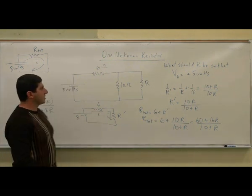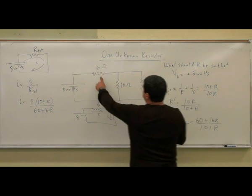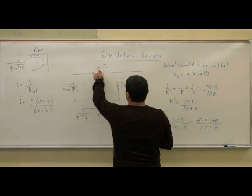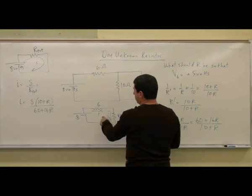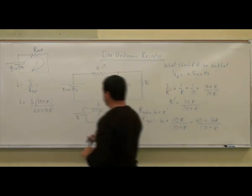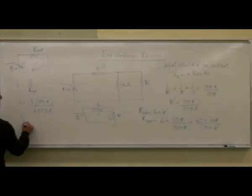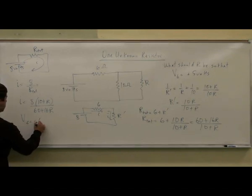Then what is our ultimate goal? Our ultimate goal is that we want the voltage of this to be five volts, right? So that means if we know the current is that, the voltage is six times that, right? So the voltage of the six ohm resistor is I times six.